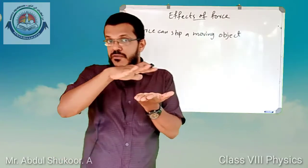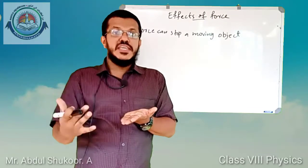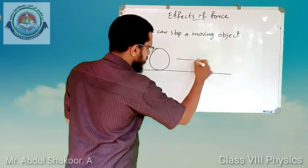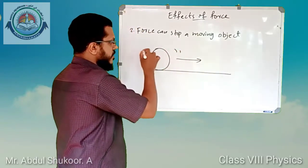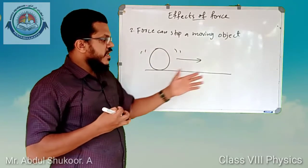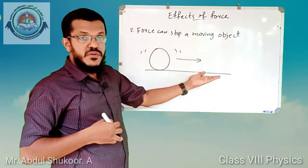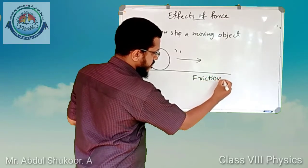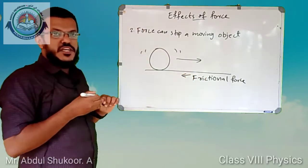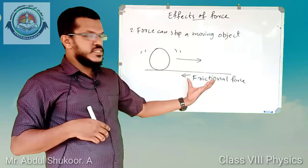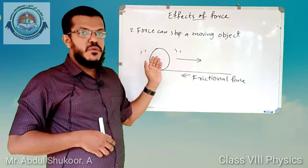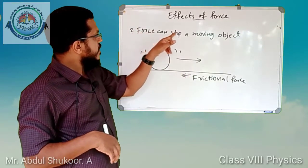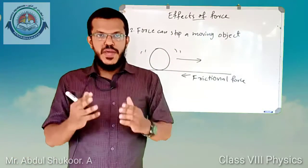In another case, if a ball is moving on a horizontal floor, after some time the ball automatically comes to rest. A force is experienced by the ball from the floor surface it moves on — that force is known as frictional force. This frictional force acts in the opposite direction of the motion of the ball, causing the ball to come to rest. This is another example of how force can stop a moving object.